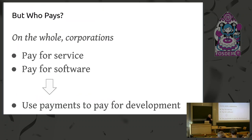Open source and free software has been paid for largely by corporations, because they have typically employed people who either as their job, or as a side effect of their job, caused the software to come into existence and be sustained. Typically, the way corporations have funded this is by charging for a service or by charging for access to the software, and that has then allowed them to pay for development to take place.